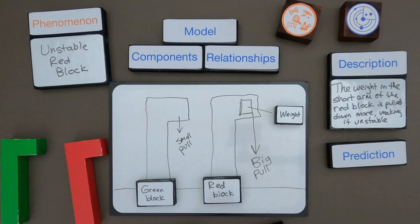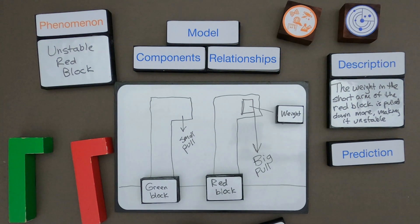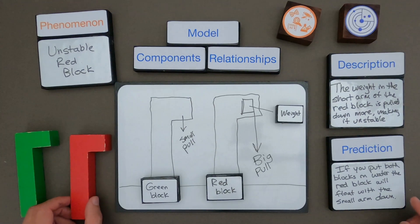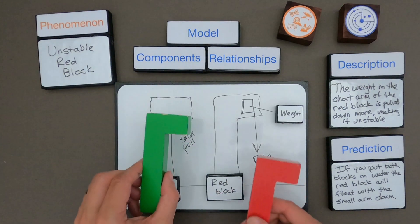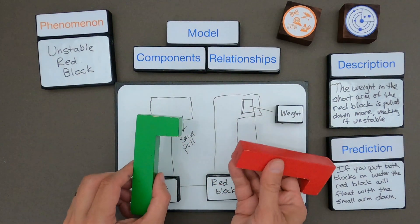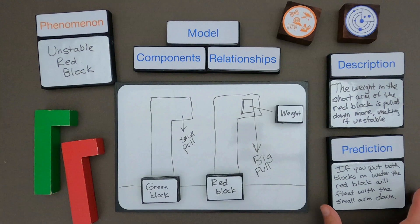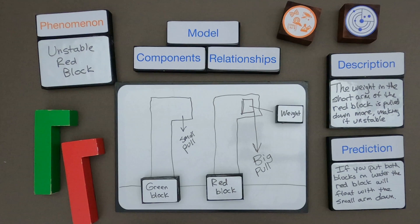Once you've got a description, the next thing you want to do is say: if my model is right, what prediction could I use my model to make? The prediction I've made is if you were to put both blocks in water, the green block might float level, but the red block is going to float with that small arm down just because there's more weight. That prediction is based on my model and that's one of the hallmarks of a good conceptual model.